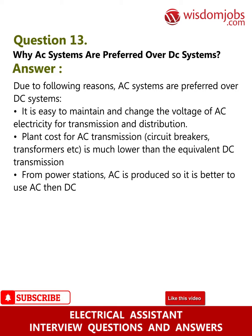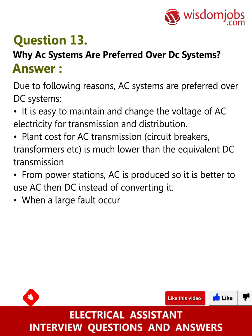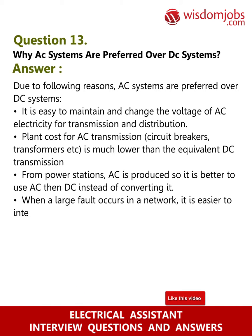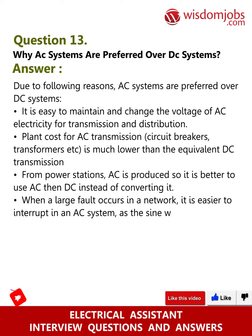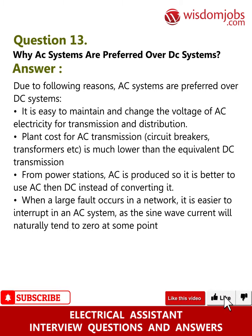From power stations, AC is produced, so it is better to use AC than DC instead of converting it. When a large fault occurs in a network, it is easier to interrupt in an AC system as the sine wave current will naturally tend to zero at some point, making the current easier to interrupt.